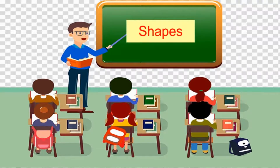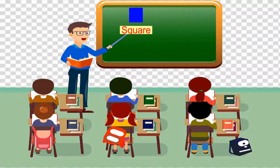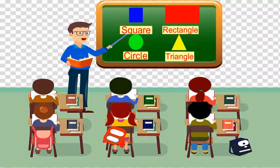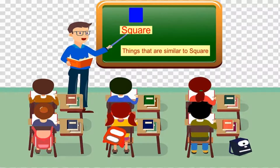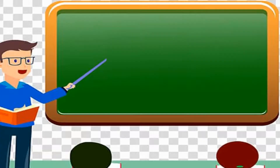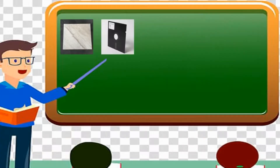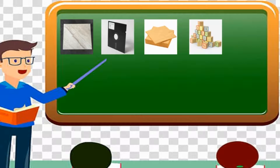Dear children, today I am going to explain about shapes. In this video we are going to discuss about square, rectangle, circle, and triangle. Square: S-Q-U-A-R-E. It has four equal sides and every angle is a right angle. Things that are similar to a square are: single tile, floppy disk, napkin, side of a wooden cube, wall clock, carom board.